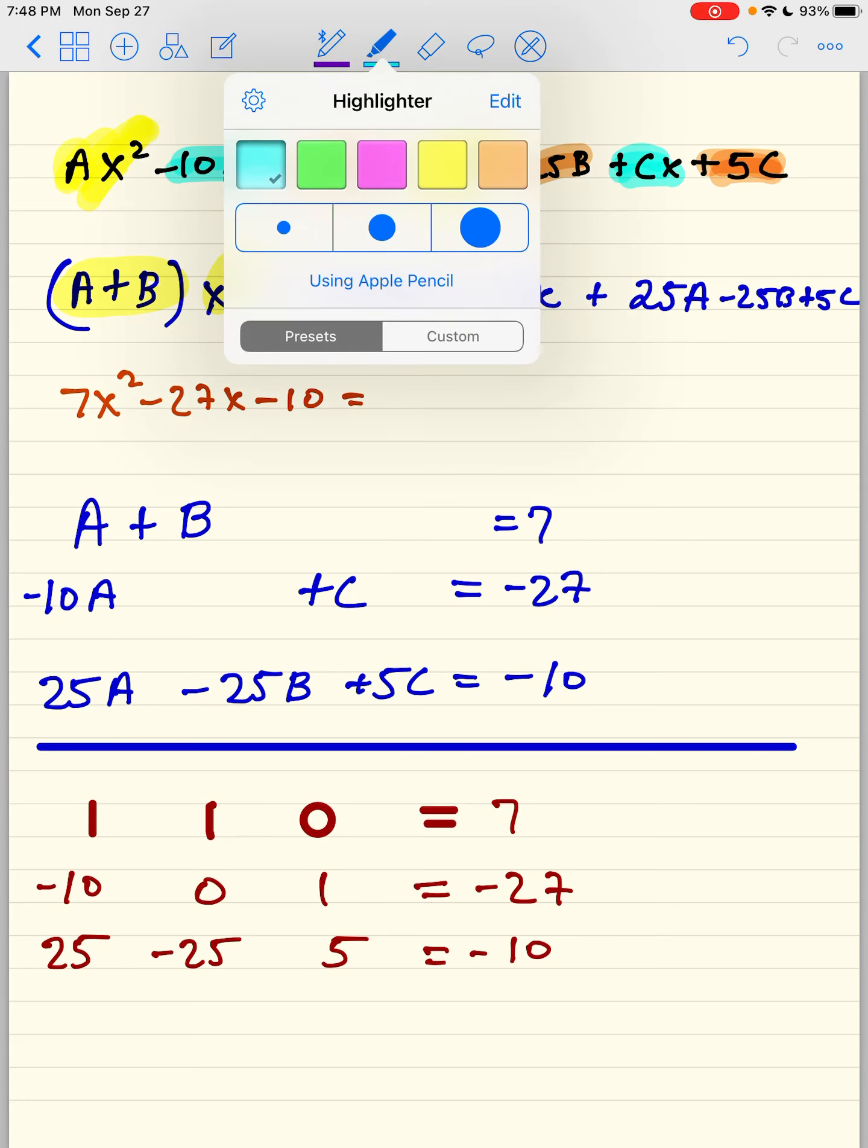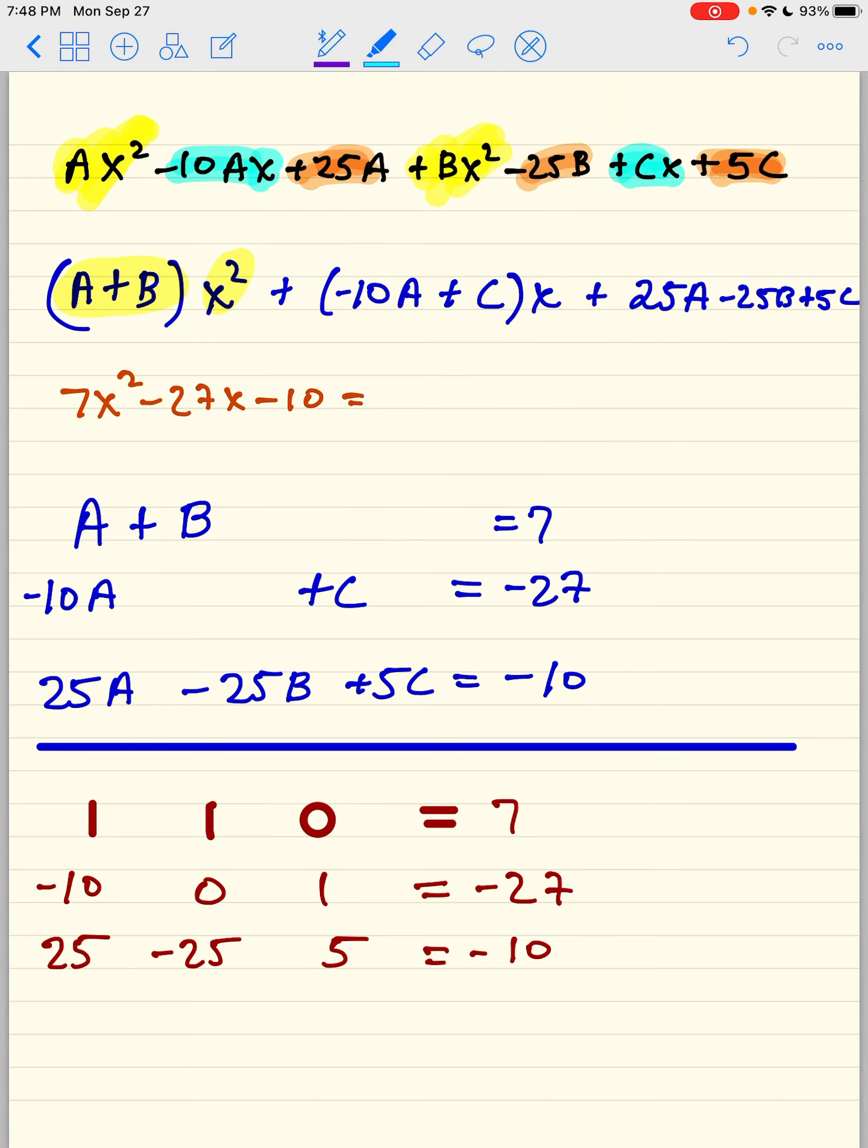And then I'm going to take the blue, and I both have an x, so I'm going to factor out the x. I'm going to have negative 10A plus C. And then I have the orange, which are the constants, so because they don't have anything in common, the three orange, I can just put them here.